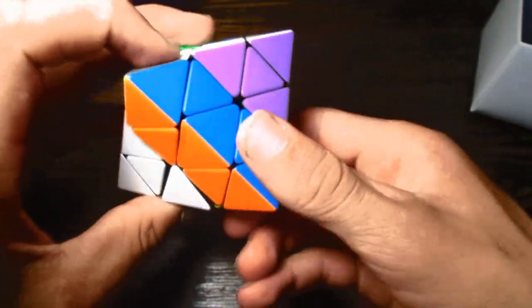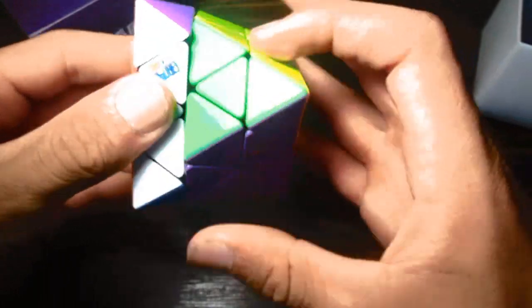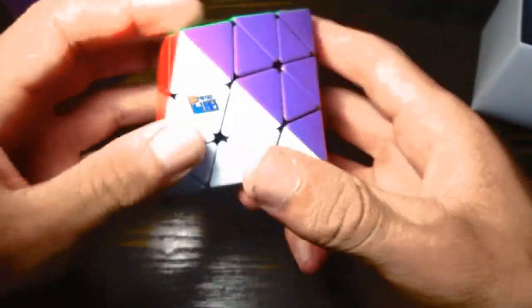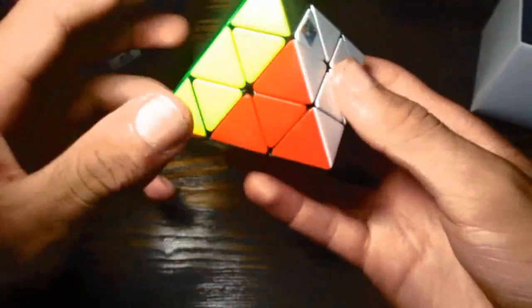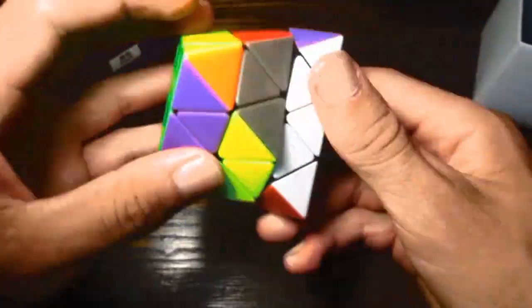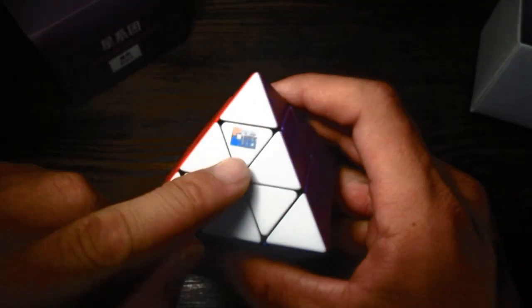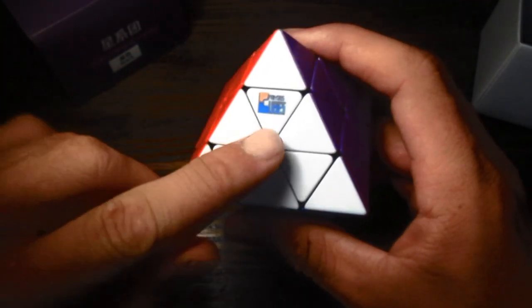Here's the Canyon modded Dianching FTO from CanyonsCubes. And now I need to learn how to solve this so I can compete in competitions. I like the logo on it. It says Canyon's Cubes.